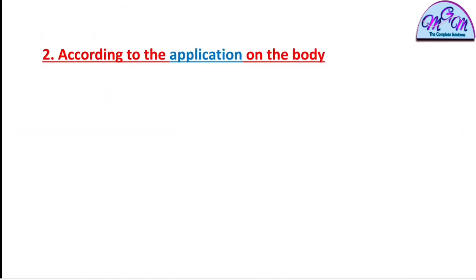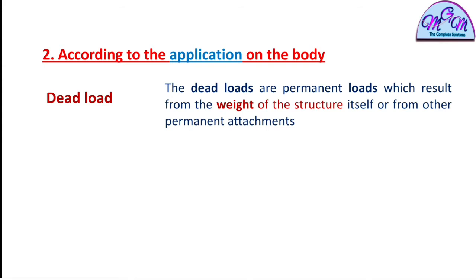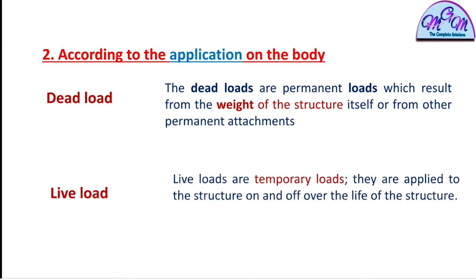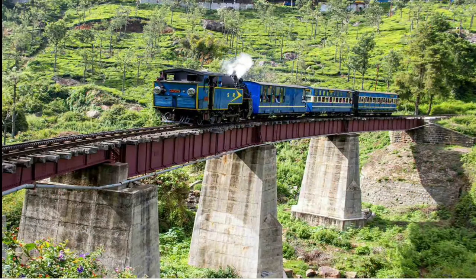The second way of classification of force is according to the application of force. There are two types of load: dead load and live load. Dead load is that type of load which arises due to the weight of the structure itself or any other things connected to that structure. If the load is applied temporarily, then that type of load is called live load. For example, consider a picture of a train moving onto a bridge.